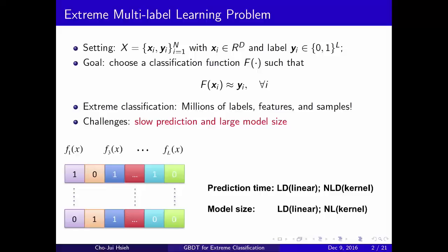In the extreme classification setting, we have millions of features, samples, and labels. In those cases, this problem is very challenging because, for example, in the traditional one versus all or one versus one classification, you have to learn order L classifiers in order to do the prediction.